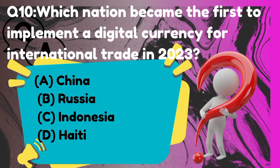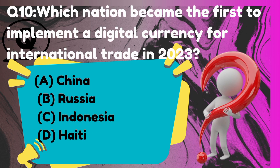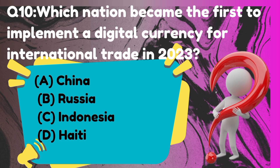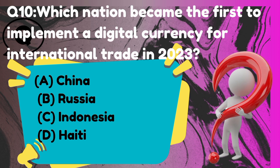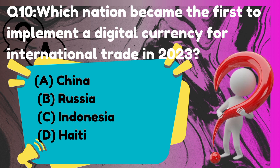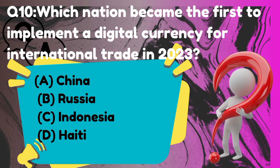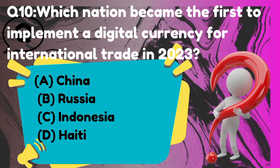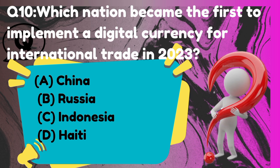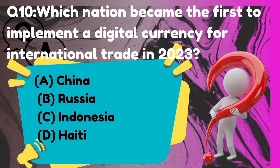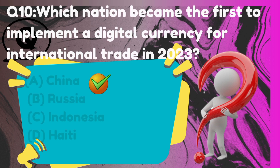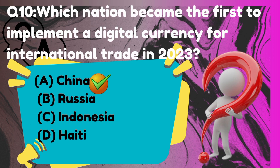Which nation became the first to implement a digital currency for international trade in 2023? The correct answer is option A: China.